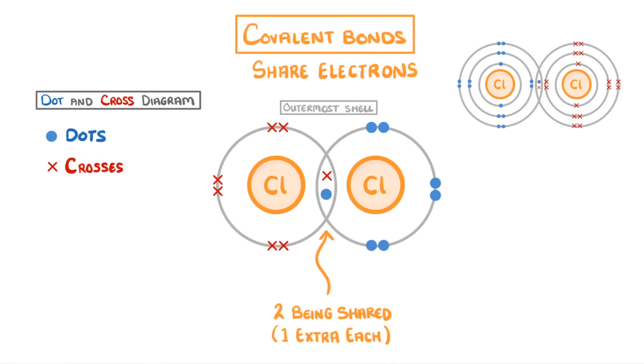An easier way to draw covalent molecules though, is with a displayed formula, where we just write the chemical symbols of the atoms, and use lines to join the atoms that are covalently bonded together. The great thing about these is that it's easy to draw big molecules that would take too long or be too complicated to draw as dot and cross diagrams.